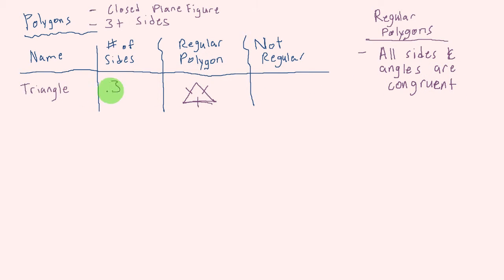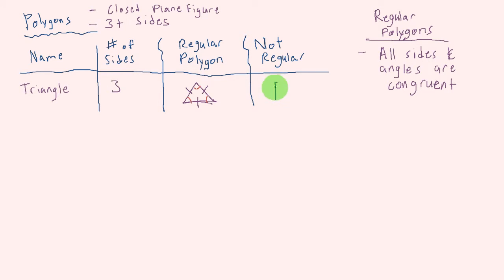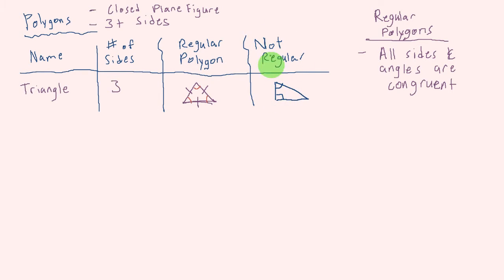For a triangle to be a regular polygon, it has to have three equal side lengths, and all of the angle measures have to be congruent — the same value. So all you need for a triangle that's not a regular polygon is just one side or one angle to not match. I can see right here I have a right triangle, and another angle is less than 90 degrees — it's acute. Therefore, this is a polygon, but it's not regular.